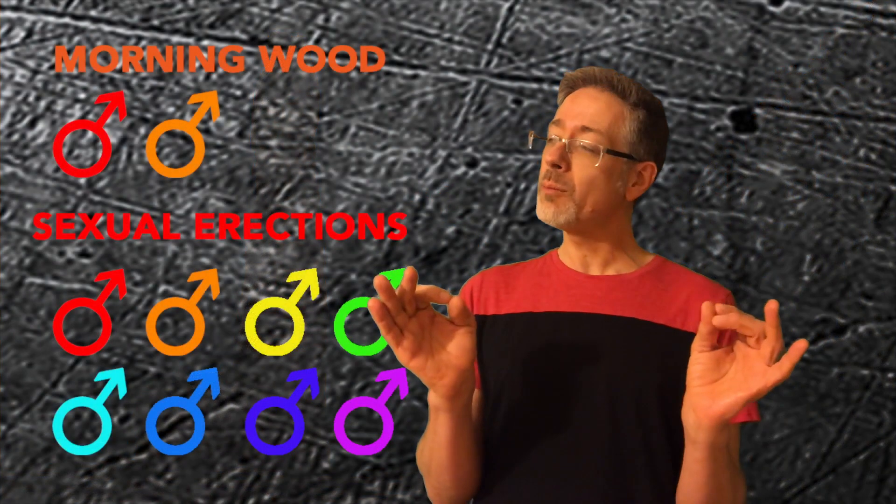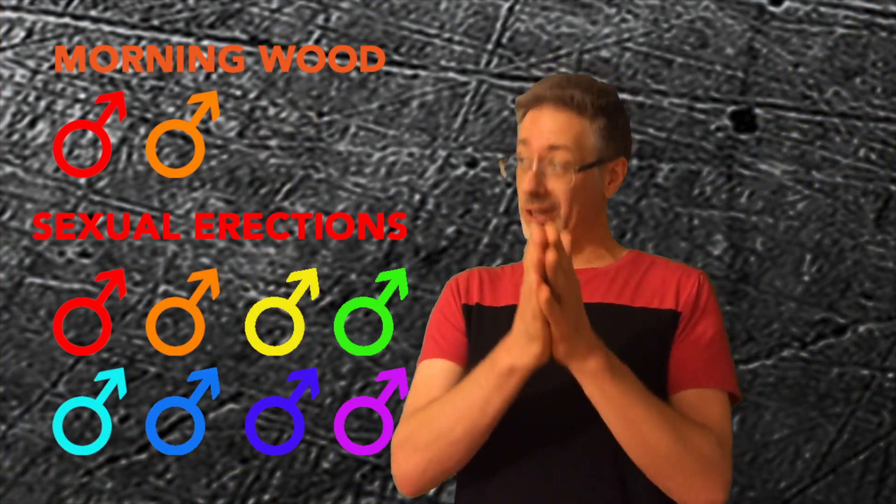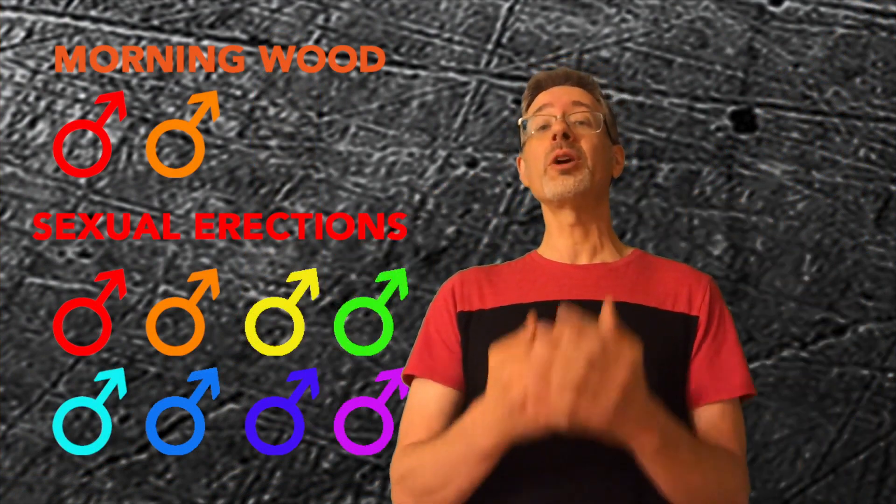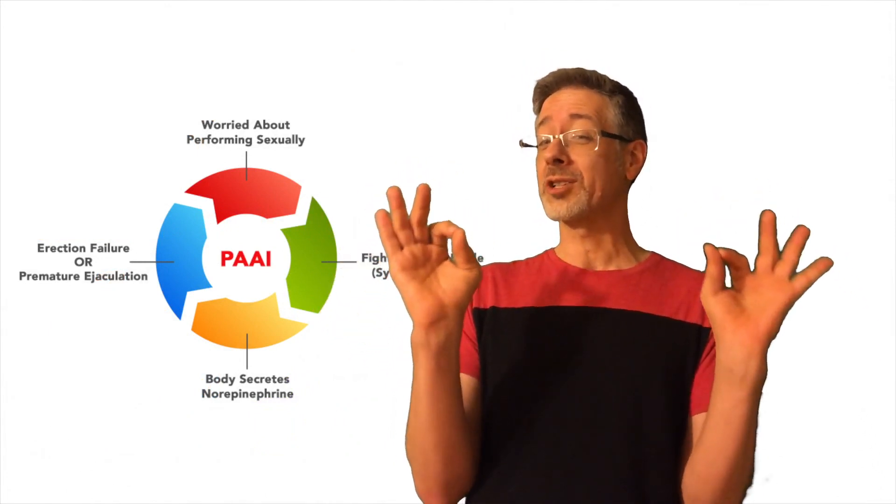These tend to be shorter than morning wood for a lot of men because they require many more biochemicals and factors than morning wood does, such as arousal. So they're much more susceptible to performance anxiety, which is why they tend to be shorter erections for a lot of men.